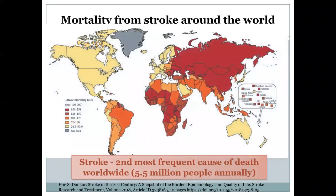A frightening statistic: nearly six million people die because of stroke every year — the mortality is huge. A world map shows stroke mortality colored in different colors; red represents the most severe situation, and gray means no information is available for that region. Try to find your own country. The severity of the problem is enormous and we need to know what to do with it.